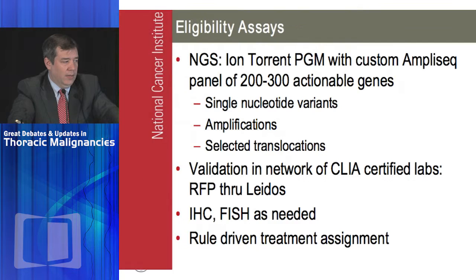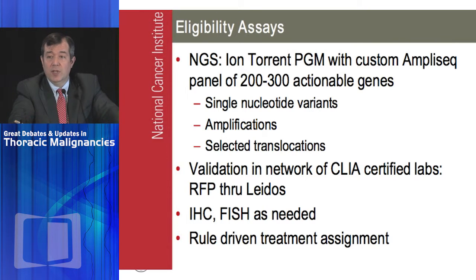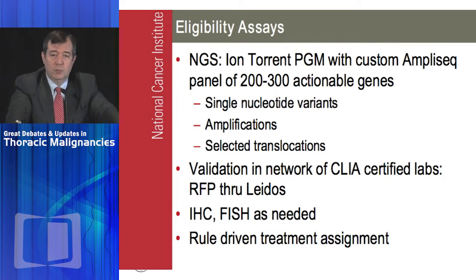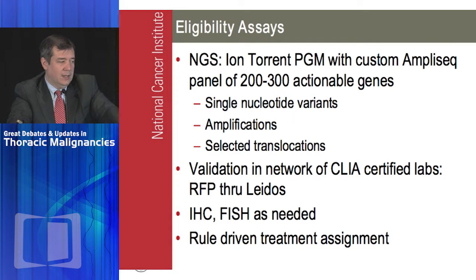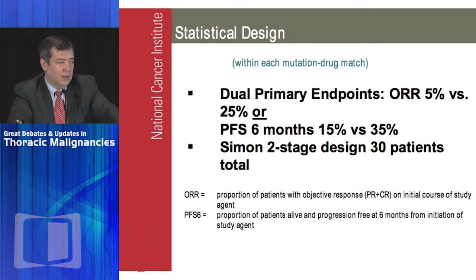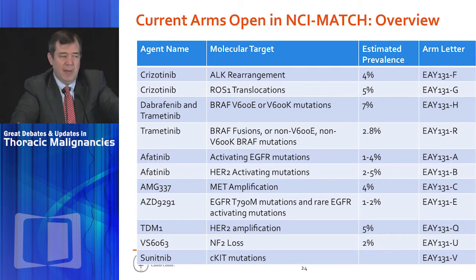Patients eligible for NCI MATCH are anybody with previously treated cancer with progression and no curative options available. Patients get next-generation sequencing — an Ion Torrent-based assay with 200 to 300 genes. The NCI is constantly revising this panel. It identifies a large number of mutations. IHC and FISH are also used if needed. After testing, patients are allocated to one of many arms.